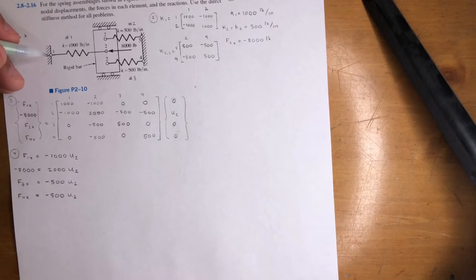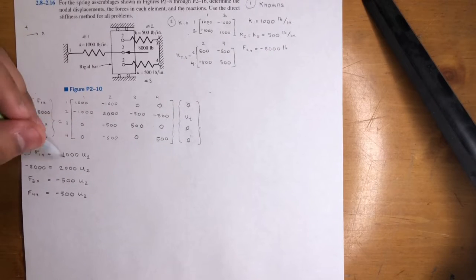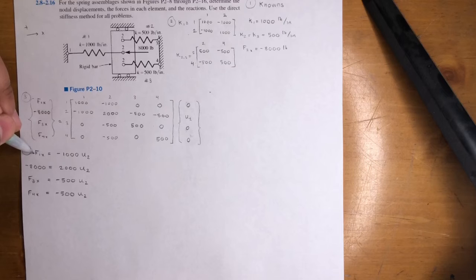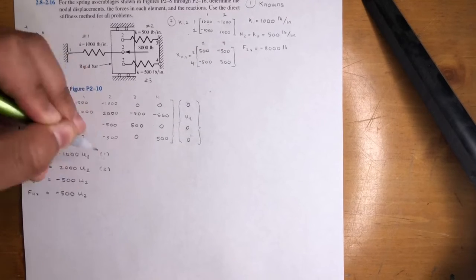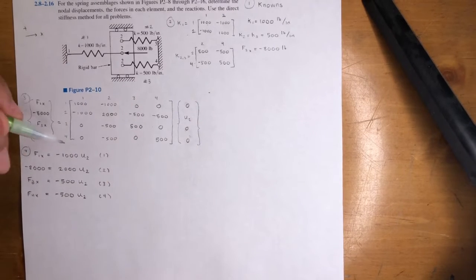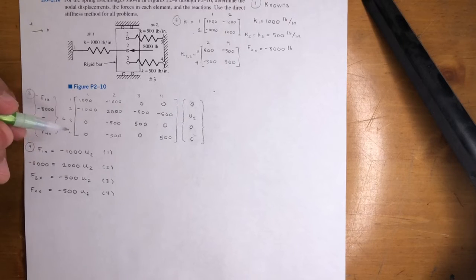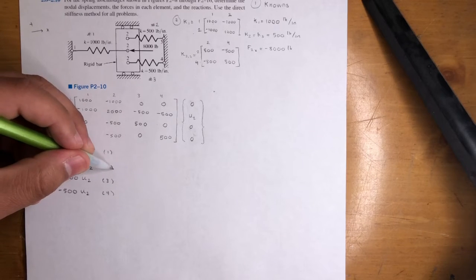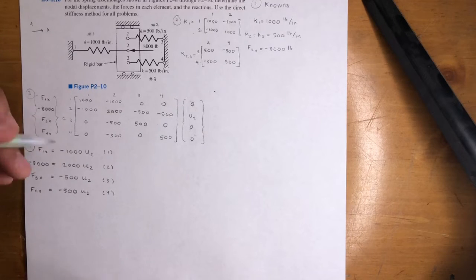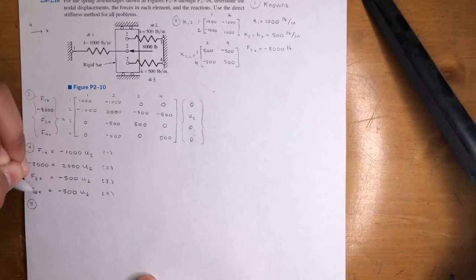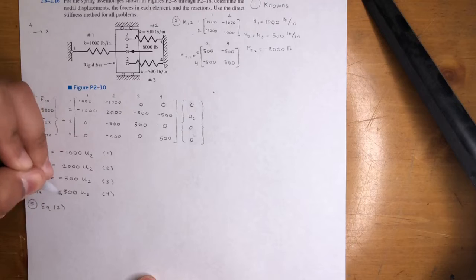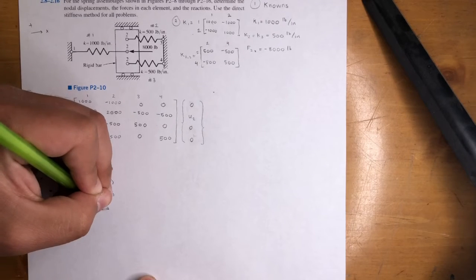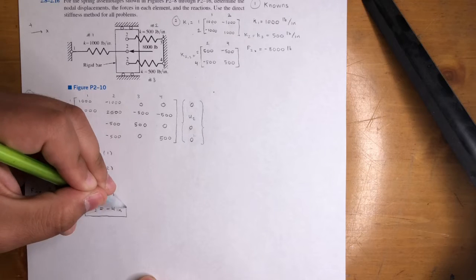Even if you do get complicated equations, assume you did. In this case they're very simple — four equations, four unknowns. You always solve for the U's first. We ignore equation one and focus on the equations that don't have unknown forces. From equation two, divide negative 8,000 by 2,000, and U2 equals negative 4 inches. That one was simple.